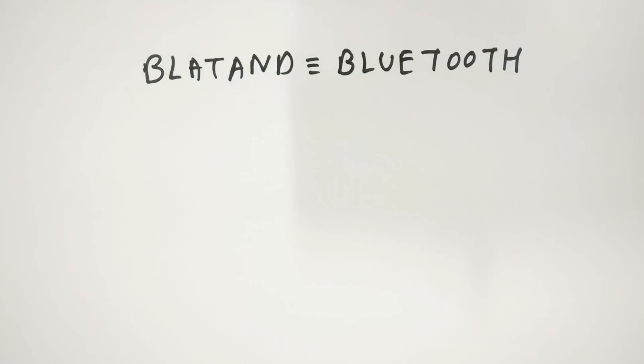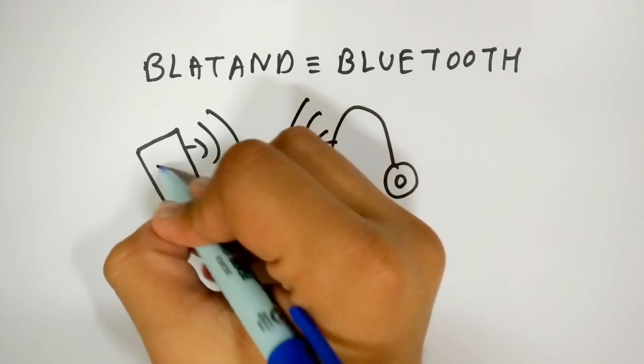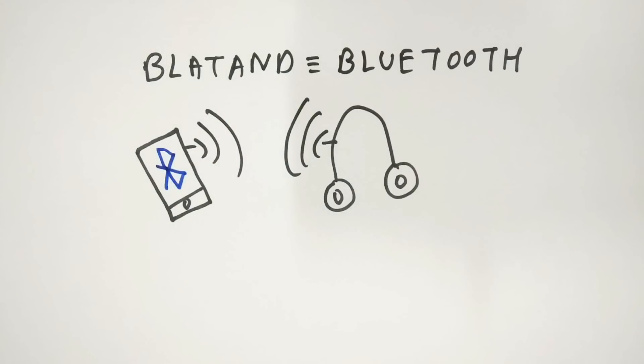The literal translation of Blatend is Bluetooth and Bluetooth does exactly what Blatend did. It connects two non-connected devices.